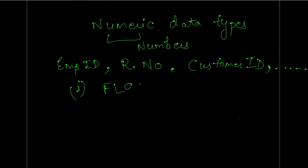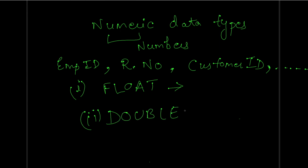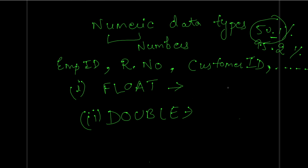We also have FLOAT and DOUBLE, which save numbers with decimal places. For example, a percentage like 95.2% or 50.1% has decimal places, so you would use FLOAT or DOUBLE. FLOAT can store up to 24 decimal places, and DOUBLE can store up to 53 decimal places.